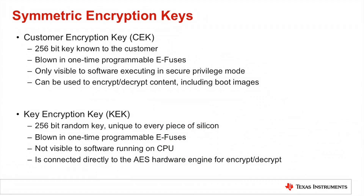The processor also contains other keys used for symmetric encryption and decryption. One of these is the Customer Encryption Key, or CEK, which is used for decryption of content sent to the processor by the system owner. Another key value is called the Key Encryption Key, or KEK. The KEK is a random value known only to the processor, unique to every piece of silicon, and not accessible by software. It is used to encrypt content so that only the same particular silicon device can decrypt it. Using this key can provide a feature known as anti-cloning protection.